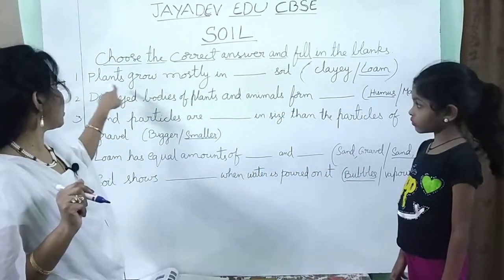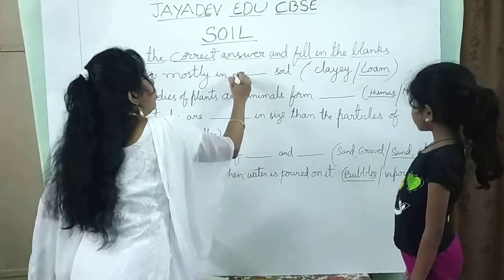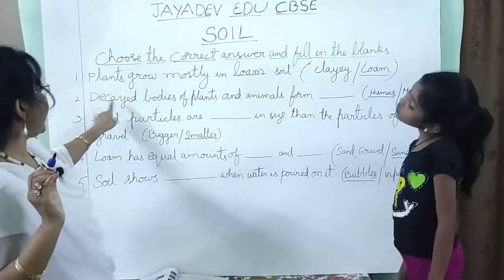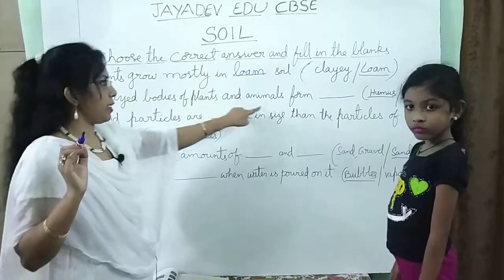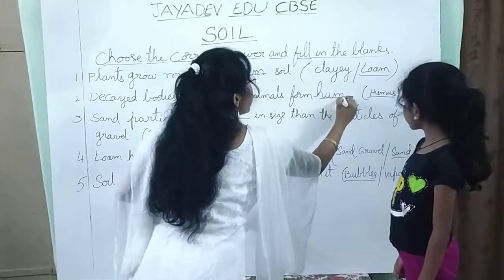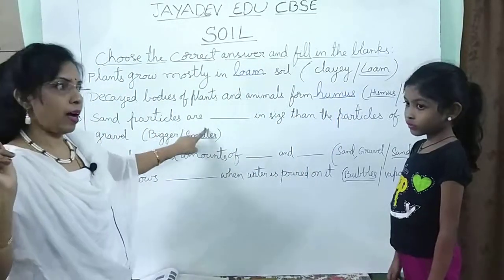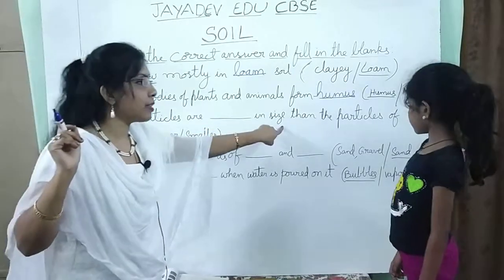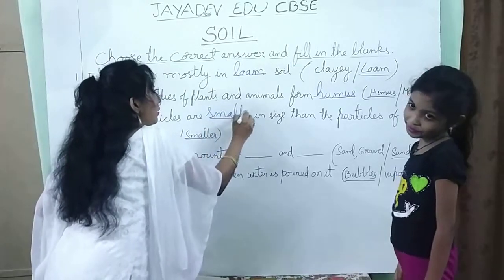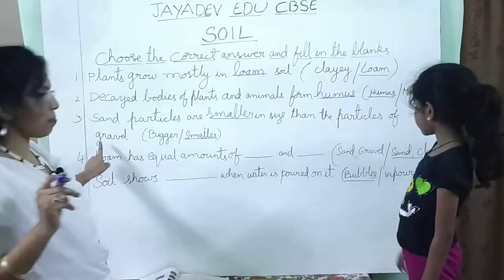Once again let us review. First: plants grow mostly in loam soil — L-O-A-M. Second: decayed bodies of plants and animals form humus. Third: sand particles are smaller in size than the particles of gravel.